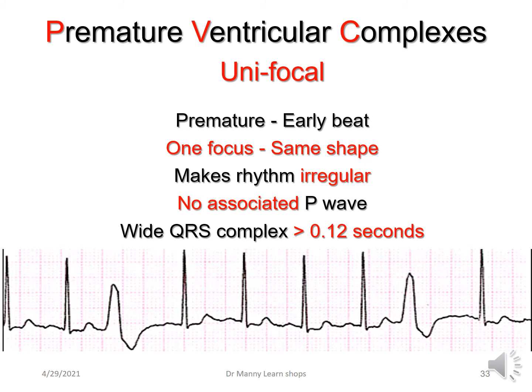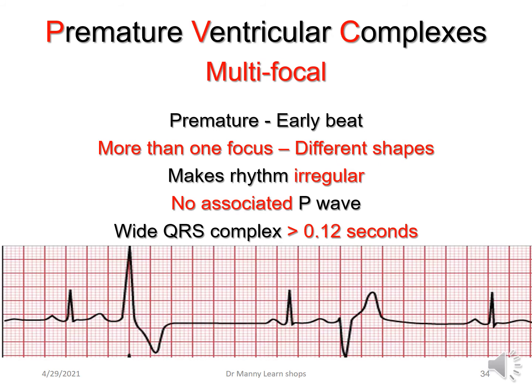PVCs can be unifocal, meaning they come from one focus and will have the same shape — no P-wave, wide QRS complex greater than 0.12 seconds. They can also be multifocal — meeting all the same criteria, but because they're coming from different areas in the ventricle, they'll have a different shape. This still makes the rhythm irregular, with no P-wave and a wide QRS, and could be a sign that something more pathological is going on.